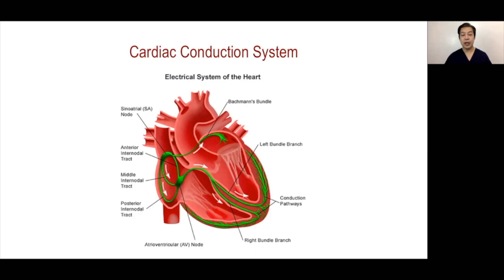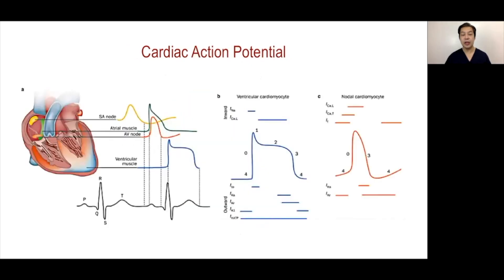So the conduction system and impulse formation are processes that are very coordinated and require specialized conduction tissue. When it comes to the cardiac action potential, we are familiar with the ventricular cardiomyocyte, which has five phases. Phase zero is rapid depolarization.